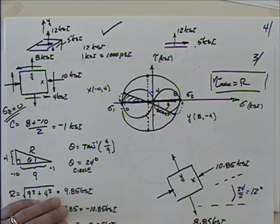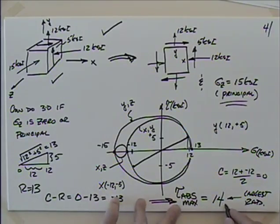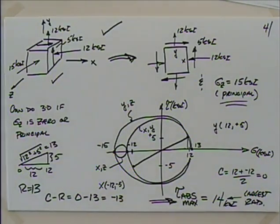The key point: whenever someone asks for absolute maximum shear stress, find the radius of the largest circle. When we looked at earlier problems, we were already finding the radius of the largest circle by default. In this 3D case, we had to do a bit more work to identify which circle is largest. After the midterm, we'll tackle this problem again from scratch, draw better circles, and talk about what the principal orientation looks like.